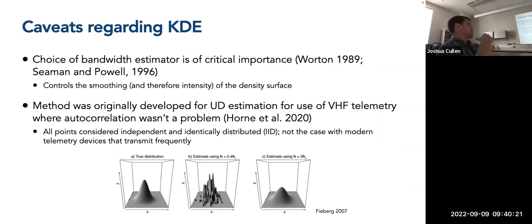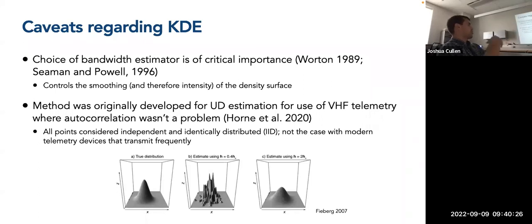When radio telemetry studies were more frequent, people typically had much less frequent observations spanning over the course of days between subsequent observations. In general, you could consider these different points independent and identically distributed — which is not the case for modern telemetry datasets where they're being reported typically multiple times a day, if not multiple times an hour. There's a lot of high autocorrelation present in animal movement tracks that should be accounted for, because otherwise it violates the assumptions of kernel density estimation, which assumes all points are independent of one another.